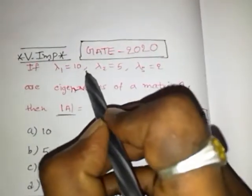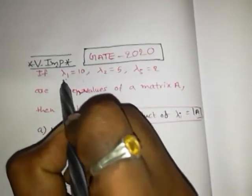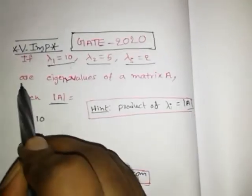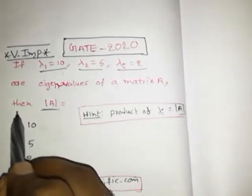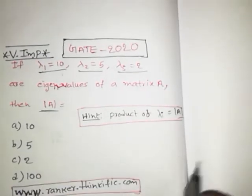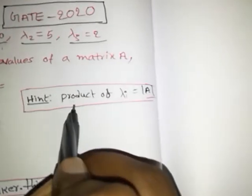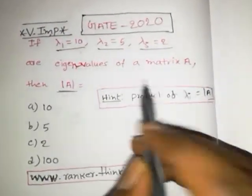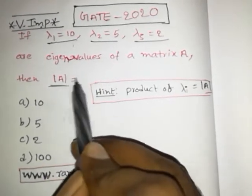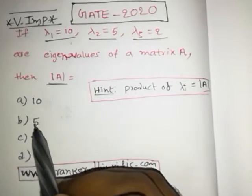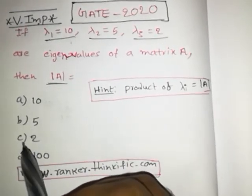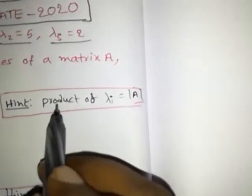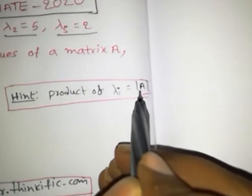The question is: if λ1 = 10, λ2 = 5, λ3 = 2 are eigenvalues of matrix A, find the determinant of matrix A. Four options are given: option A is det(A) = 10, option B is det(A) = 5, option C is det(A) = 2, and option D is det(A) = 100. We know that the product of eigenvalues equals the determinant of the matrix.